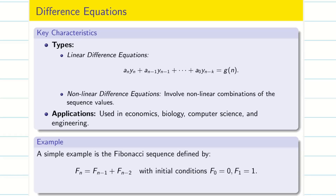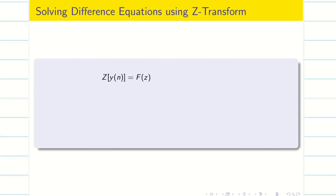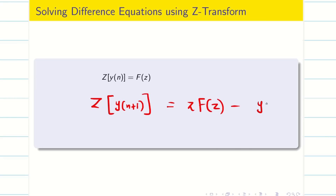Now let us go into the problem solving point of view: solving difference equations using Z-transform. Here we consider y(n) as the basic unit. Z of y(n) is F(Z). Then Z of y(n+1) is Z times F(Z), and we need one initial condition y(0), multiplied by Z.